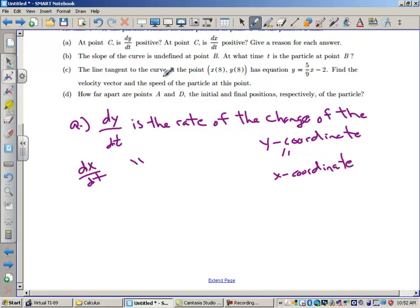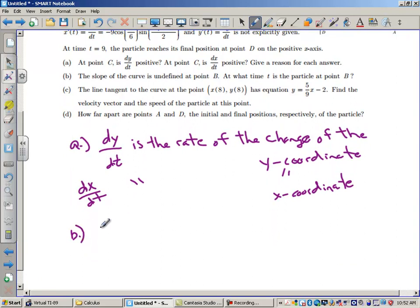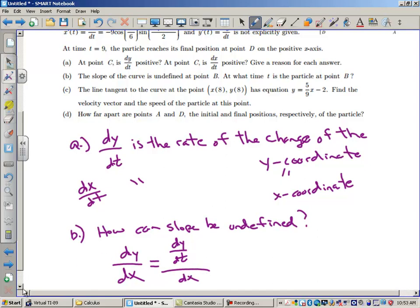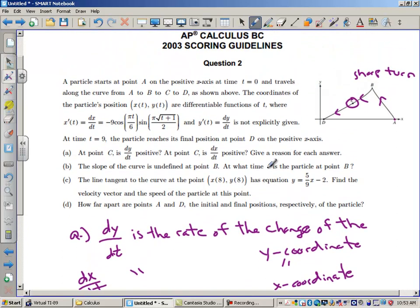All right, part B. The slope of the curve is undefined at point B. Well, that's clear because that is a sharp turn. That's a cusp. So yes, the derivative is undefined there. And we're supposed to figure out at what time t is the particle at point B. So my question for you is how can slope be undefined? How is it possible for slope to be undefined and what does that mean? Now your slope equation in parametrics is dy dx equals dy dt over dx dt. How can you make a fraction undefined? How is it possible for this to be does not exist or infinity? What will you have to do?